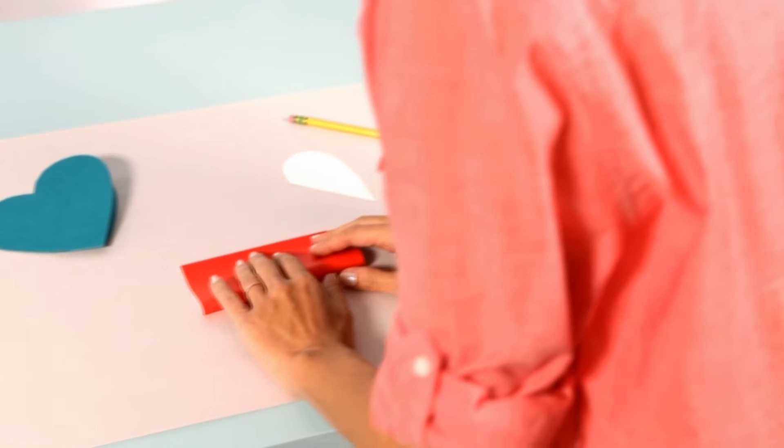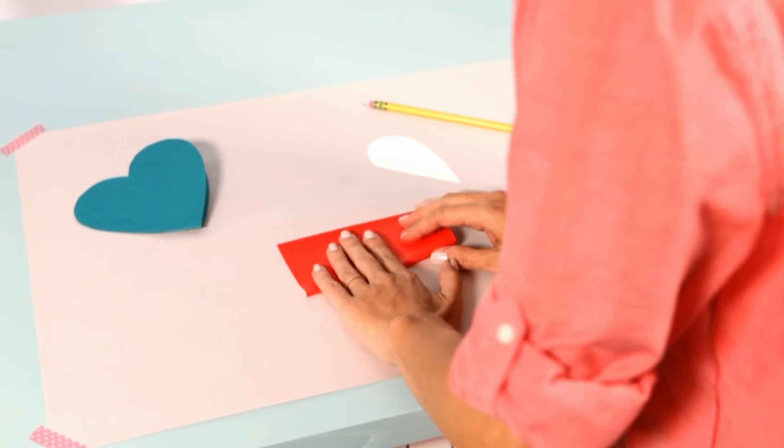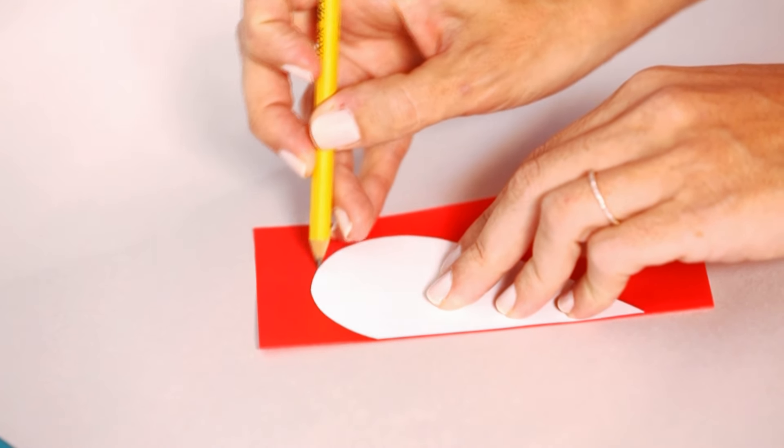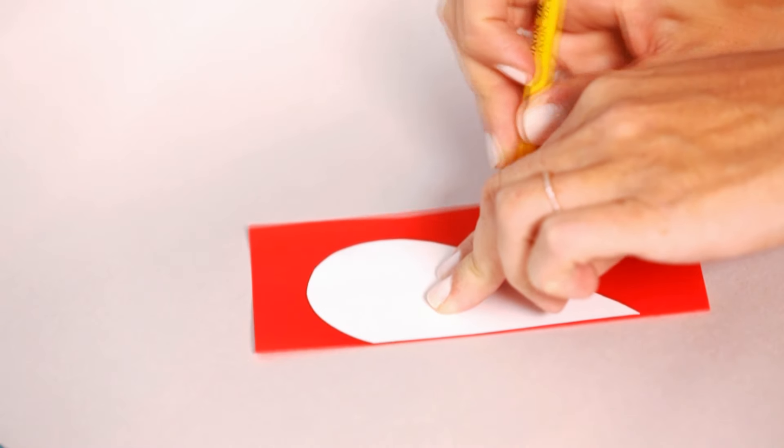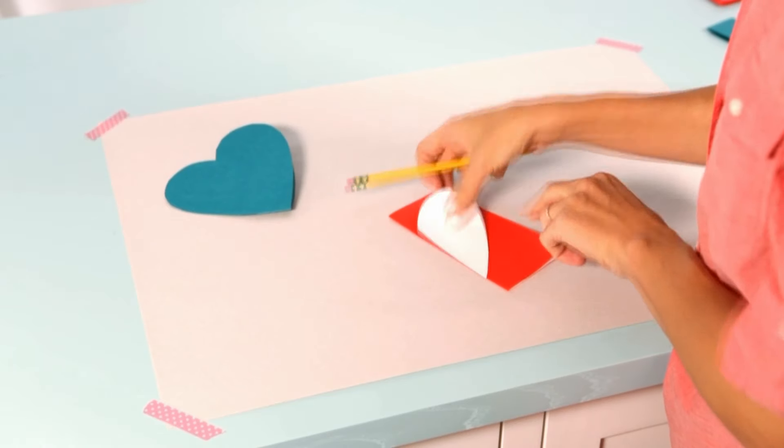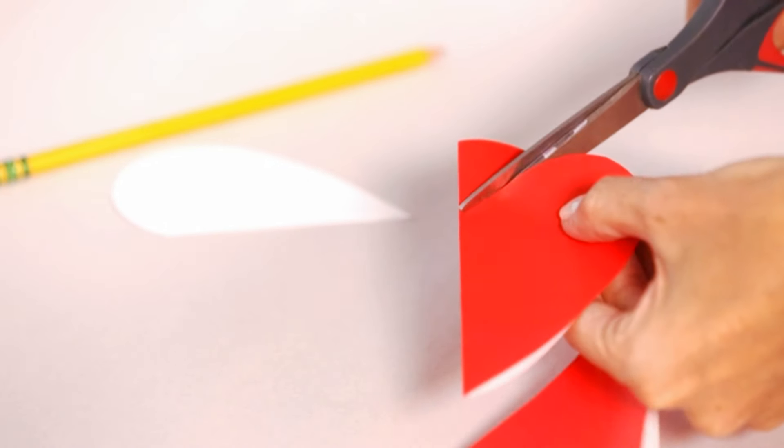Now we're going to make the snowflake heart. Fold a piece of origami paper in half and trace the half heart template onto the paper, placing the straight edge on the fold. Cut it out but don't unfold it.